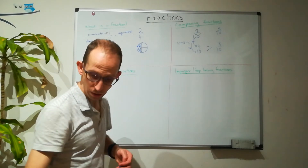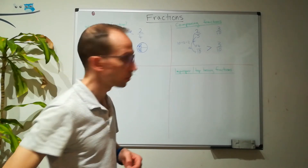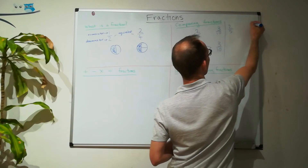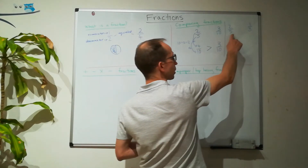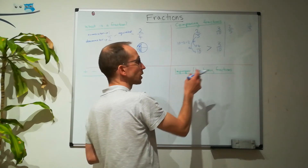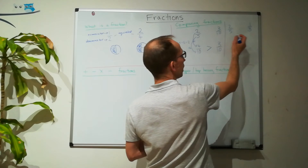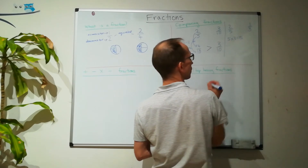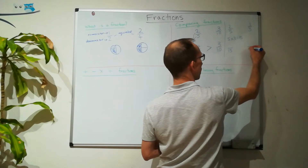Now if we had something a bit different, for example two-fifths and one-third, it's not quite as simple — three doesn't go into five without a remainder, and five doesn't go into three. So we still want to get our denominators the same, but we're going to have to change both fractions. The best way is to multiply our denominators: five times three gives us fifteen.